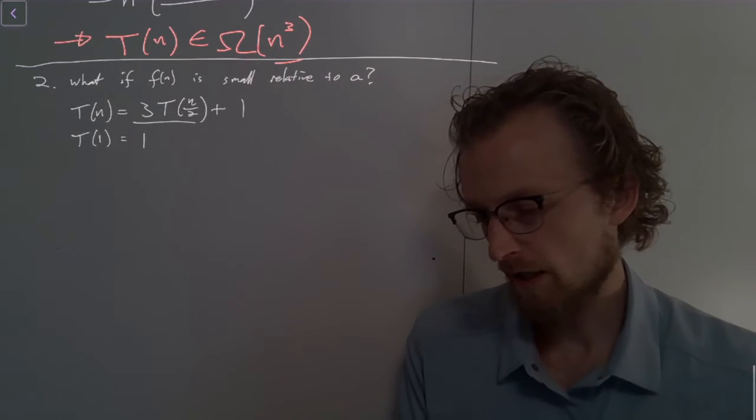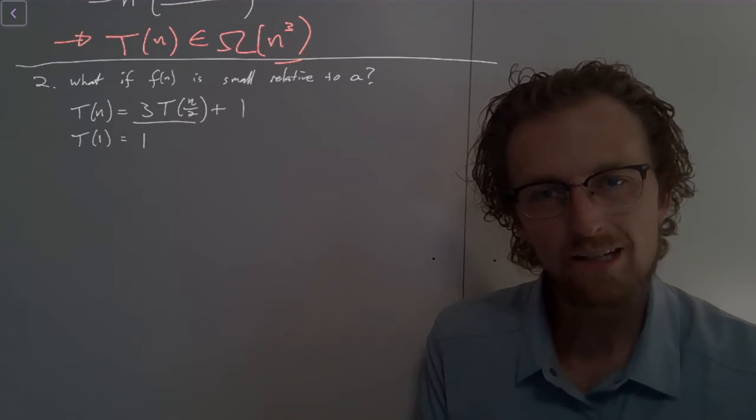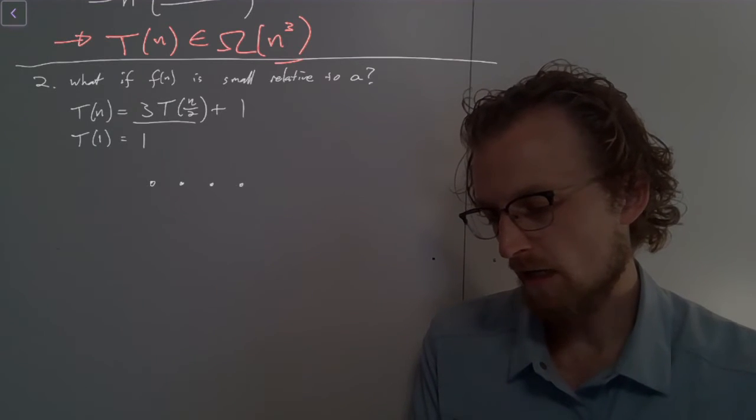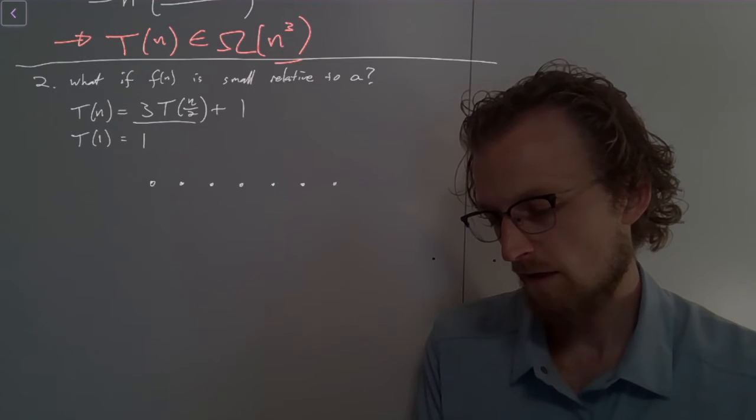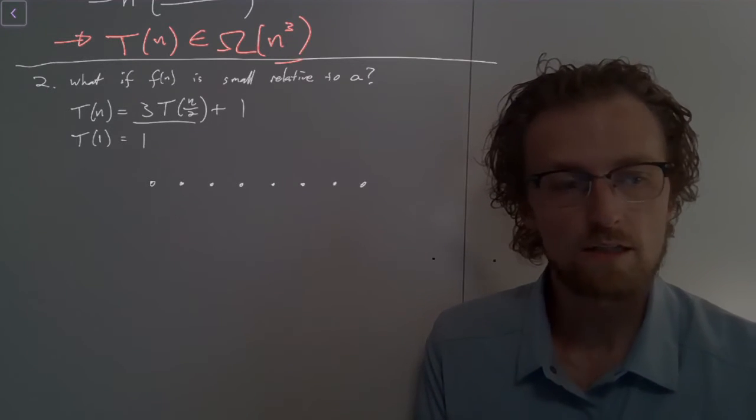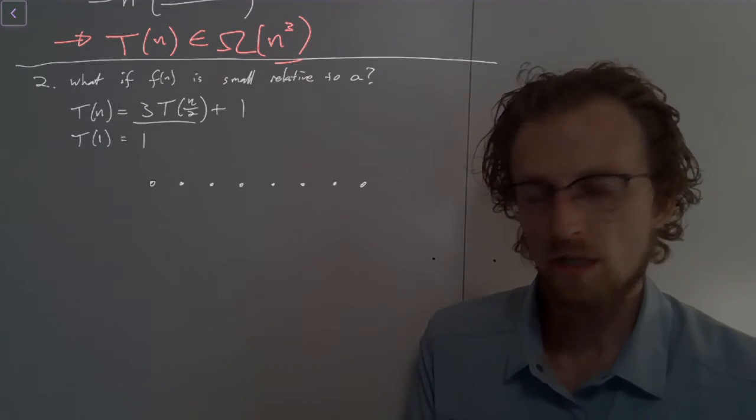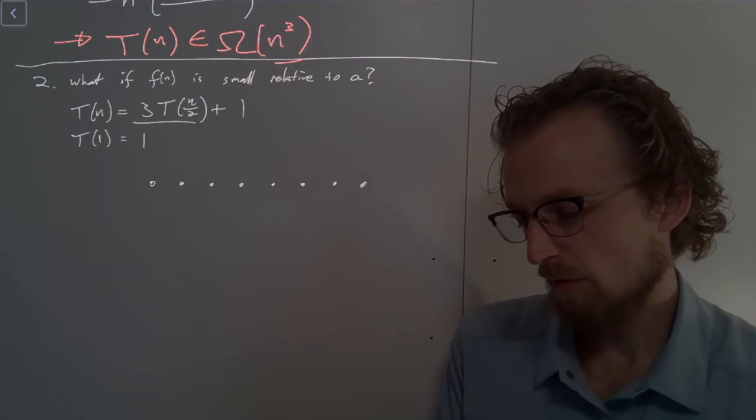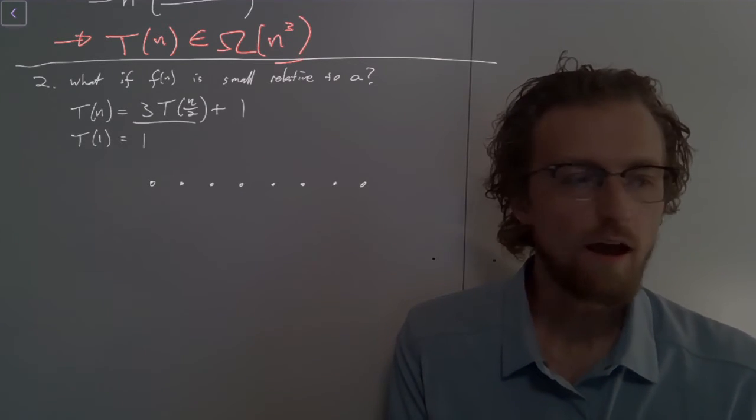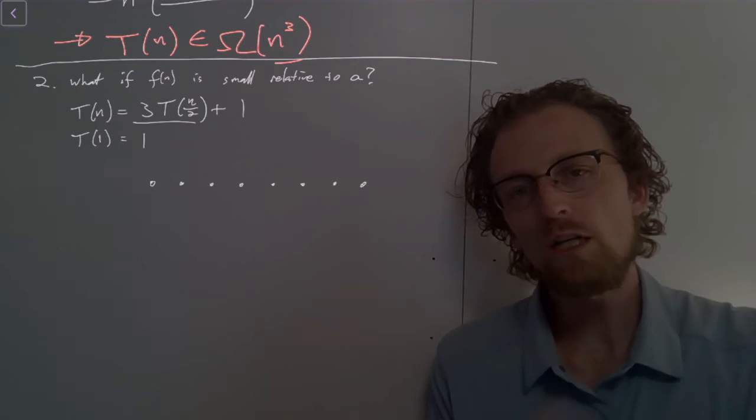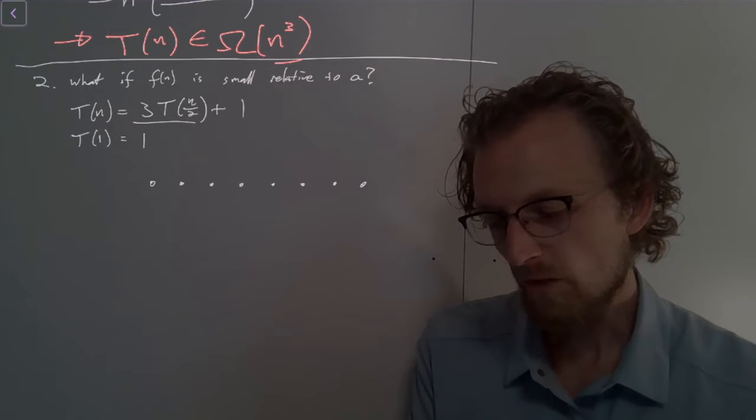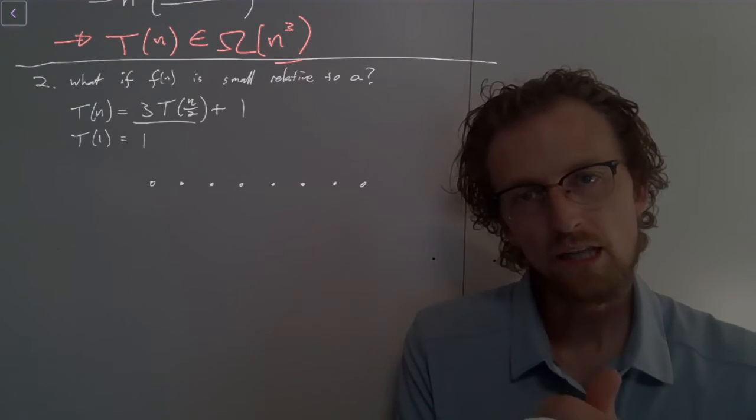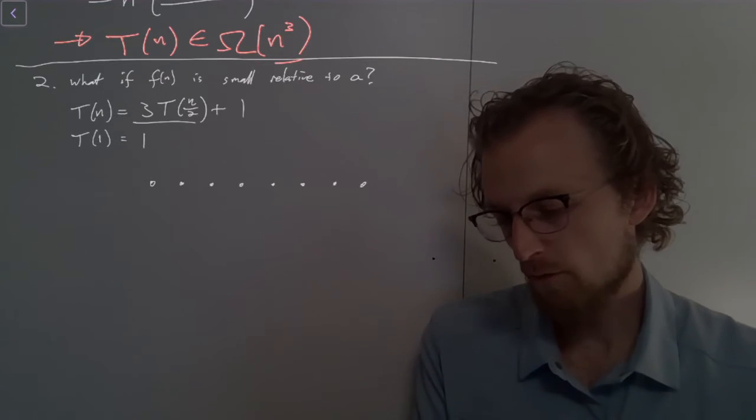So what does this recursion tree look like? Well, this one's going to be a little bit more complicated to draw. So what we have is our eight element array to begin with. I'm still going to visualize this as an array, even though array doesn't make as much sense anymore here because we have three recursive calls on half the size. What happens is we imagine cutting this in half and then making three recursive calls on something half the size. So at our top level of recursion, we have a size eight array.